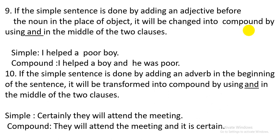Number ten: if the simple sentence is done by adding an adverb at the beginning of the sentence, it will be transformed into a compound sentence by using 'and' in the middle of the two clauses. Simple sentence: 'Suddenly, they will attend the meeting.' Here you change the adverb into an adjective and follow the structure: subject 'it' plus be-verb plus adjective. This newly created structure is set in the second half. The compound sentence is: 'They will attend the meeting and it is certain.'